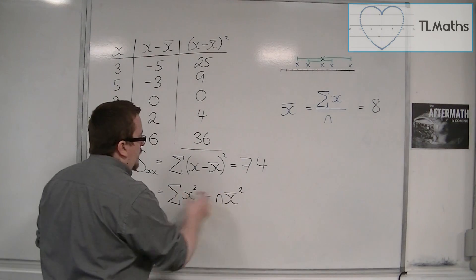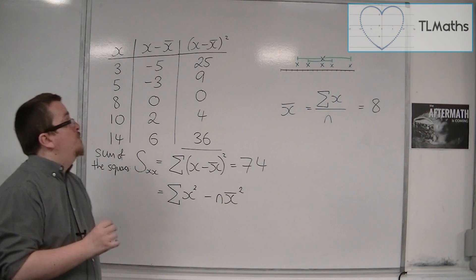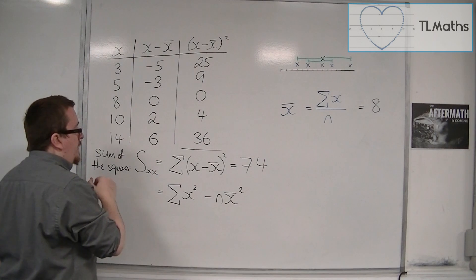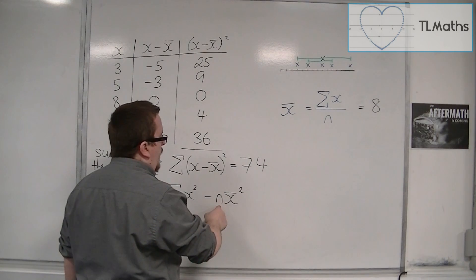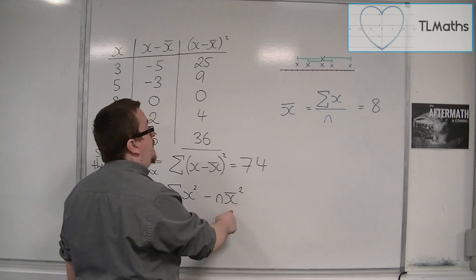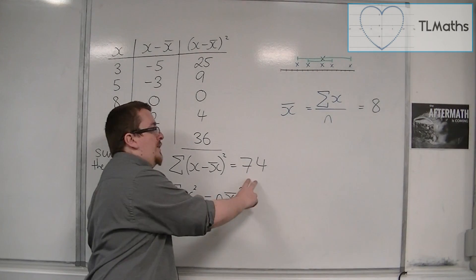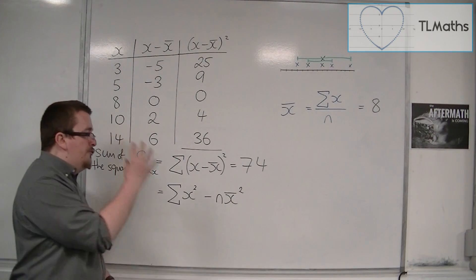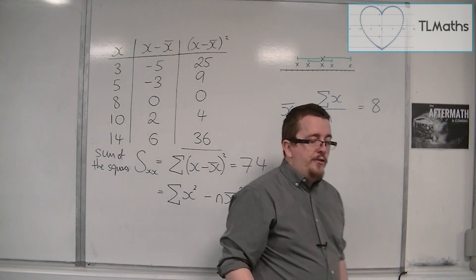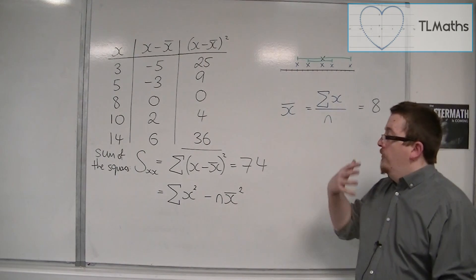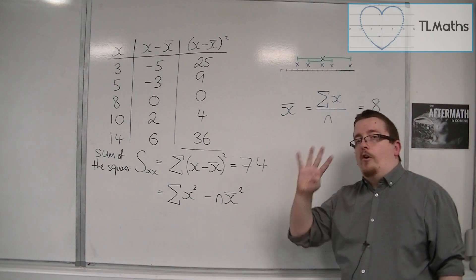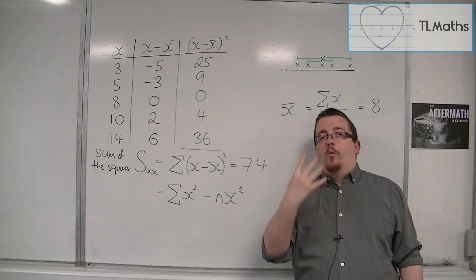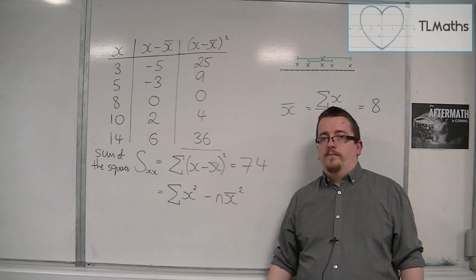So it's actually much easier to use this formula, which is where you add up all of the x squareds and then take away n times x̄ squared. This will find you exactly the same result. And you might want to try it. Do an x squared column, add them together, and then take away 5 times 8 squared and see that you get to exactly the same answer. So this is the sum of the squares. And from this, we are going to find four different ways of analyzing the data. And I'm going to explain to you what each of those means in the next video.